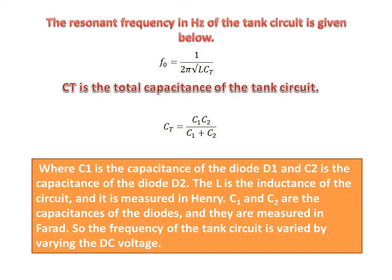L is the inductance of the circuit and is measured in Henrys. C1 and C2 are the capacitances of the diodes D1 and D2, measured in Farads. So the frequency of the tank circuit is varied by varying the DC voltage.